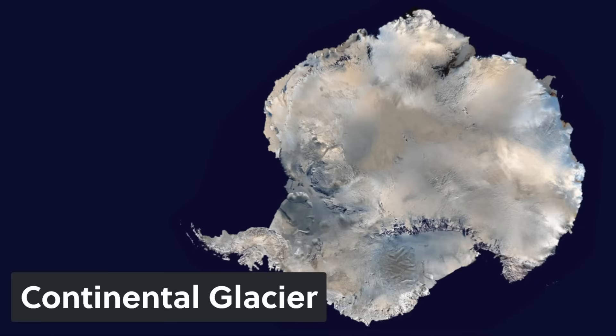A great example of a continental glacier would be Antarctica. It's this huge thick sheet of ice that covers virtually the entire land mass.